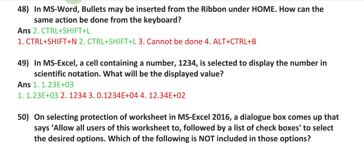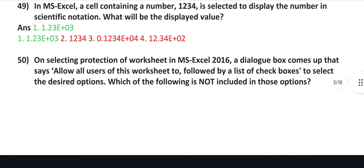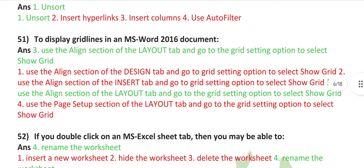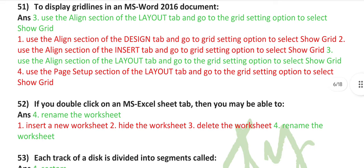In MS Word, bullets may be inserted from the ribbon under home. How can the same action be done from the keyboard? Control plus Shift plus L. In MS Excel, a cell containing the number 1234 is selected to display the number in scientific notation. What will be the displayed value? 1.23E+03. On selecting protection of worksheet in MS Excel 2016, a dialog box comes up that says allow all users of this worksheet to, followed by a list of checkboxes to select the desired option. Which of the following is not included in this option? Unsort.